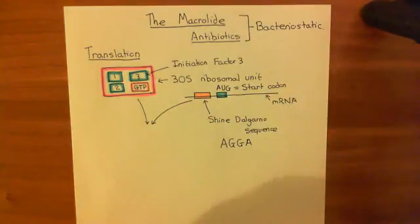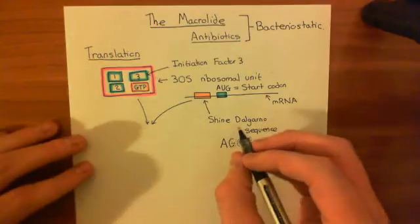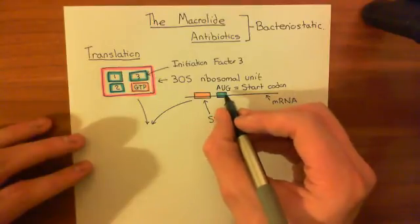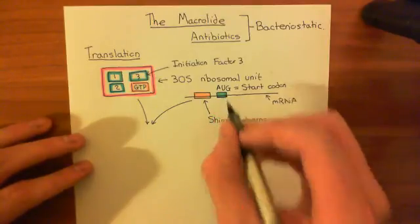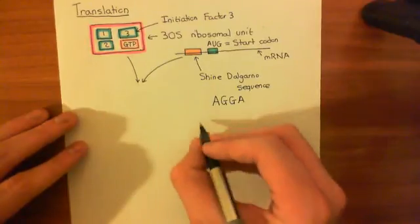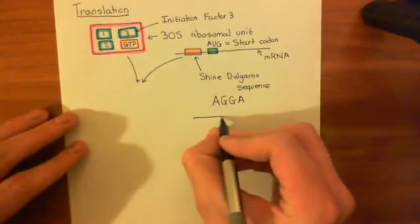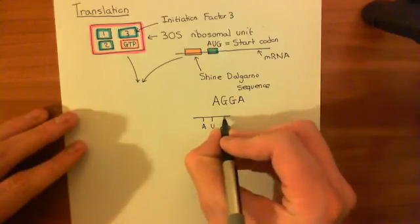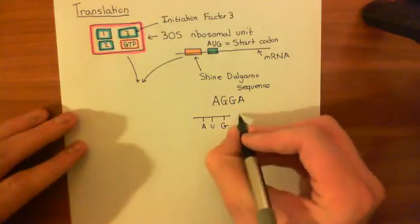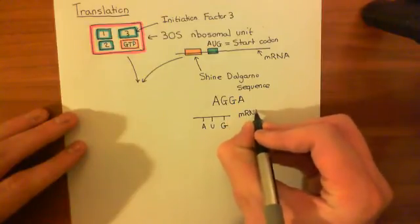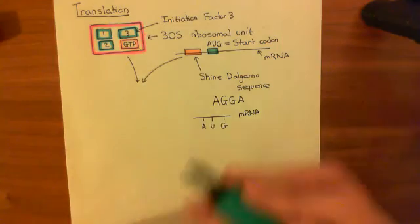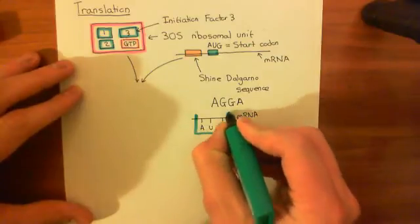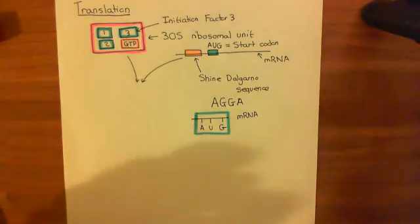I'll highlight the start codon in turquoise. The first tRNA that is going to come in and bind to this mRNA is going to have a complementary sequence of organic bases to A, U, G. If we draw a bigger picture — this is the start codon: A, U, G on the piece of mRNA. These three organic bases are the start codon.